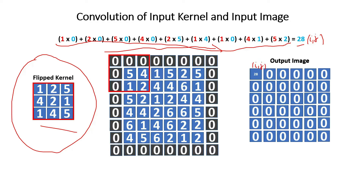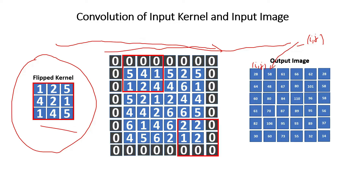We can do this for all elements. For example, if we move to the next position, we get 58, and this 58 will come here. We can do this for all pixels and get the results shown here. For those who use conv2 and imfilter functions in MATLAB, the conv2 function and imfilter function with 'conv' specified both flip the kernel internally. So it's important to be aware of this internal flipping.